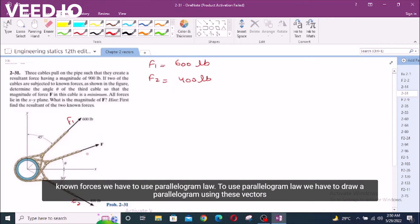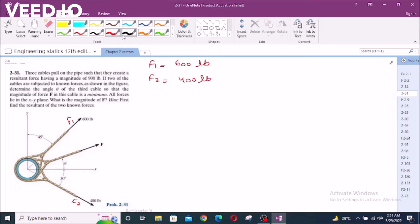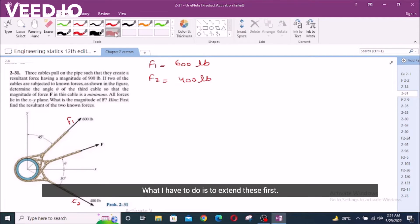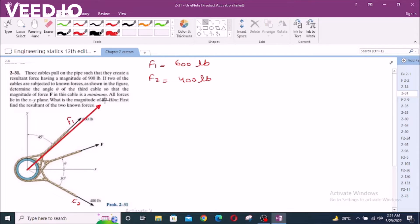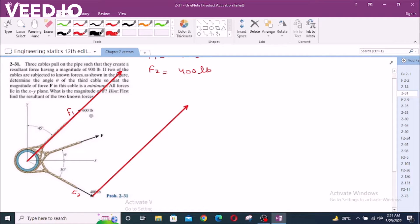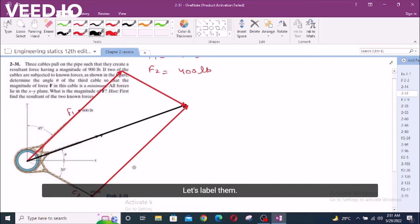To define the resultant of these two known forces, we have to use parallelogram law. To use parallelogram law, we have to draw a parallelogram using these vectors. What I have to do is extend these vectors. Let's label them, this is the projection of F1 force, this is the projection of F2 force.